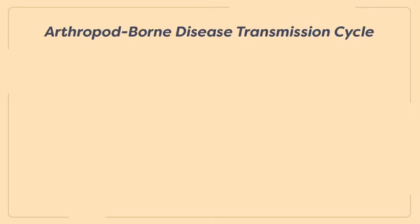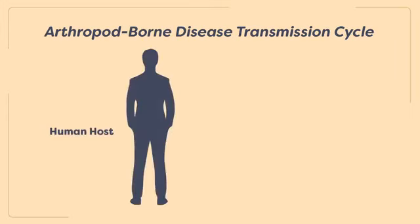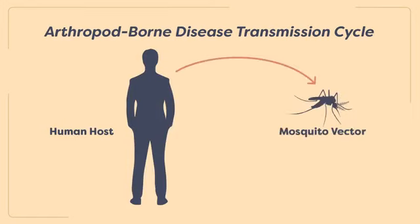Disease-causing organisms, such as bacteria, viruses, and parasites, are transmitted between hosts by vectors in a process known as a transmission cycle. The transmission cycle of an arthropod-borne disease typically involves three components: first, a vertebrate host infected with a disease-causing organism; second, an arthropod vector that acquires the organism from an infected host and is capable of transmitting it to another vertebrate host; and third, another vertebrate host that is susceptible to infection by the disease-causing organism.